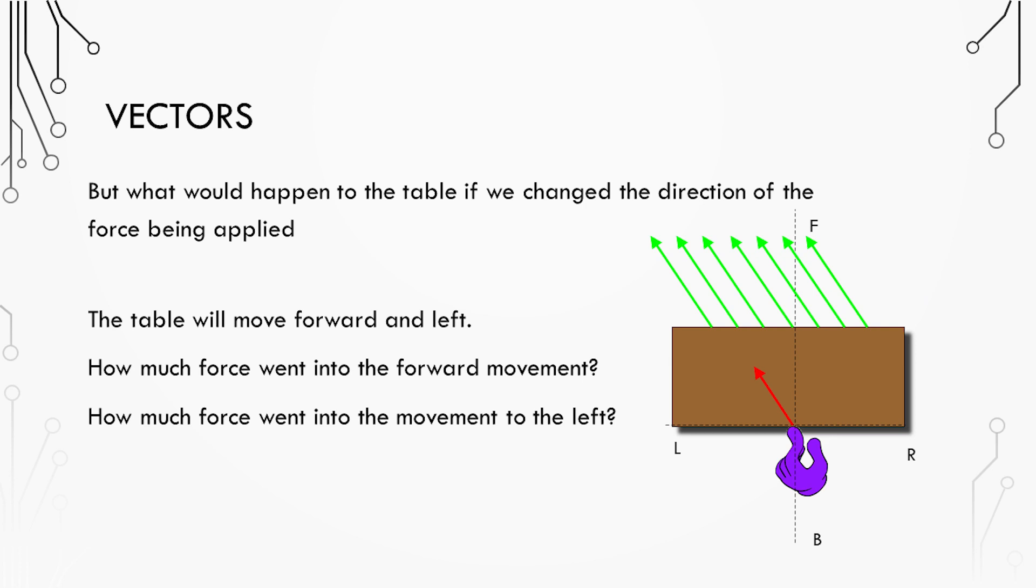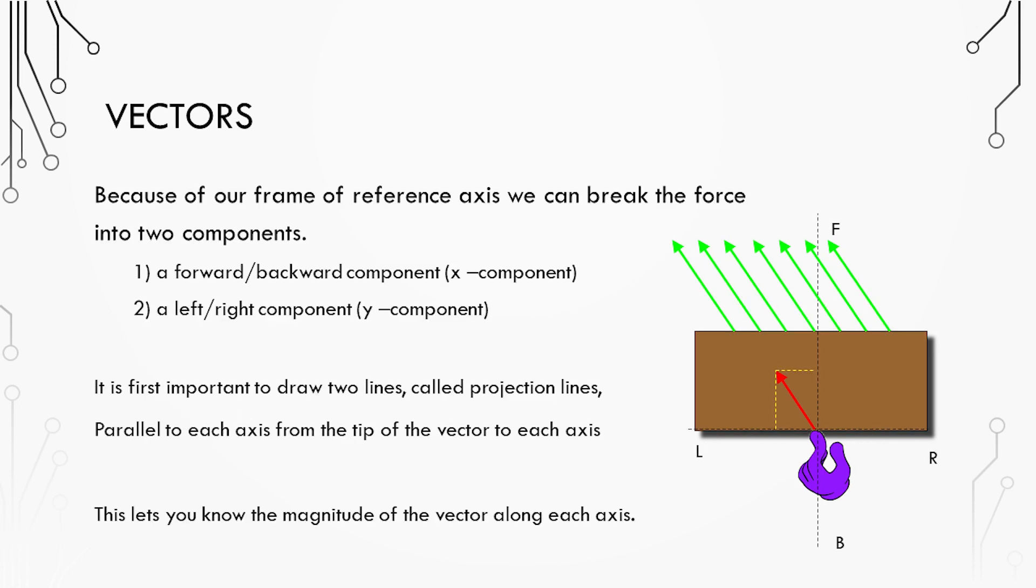Now let's take a look at what would happen if we change the direction of the force vector. If we now push the table a little bit forward and a little bit to the left we're gonna expect the table to follow suit and move in that direction a little bit forward and a little bit to the left. But we need to know how much forward and how much left.